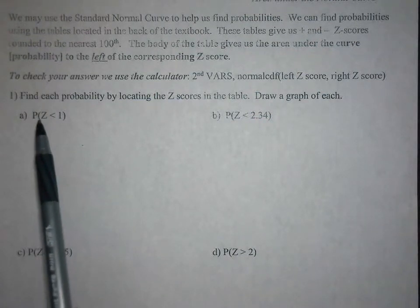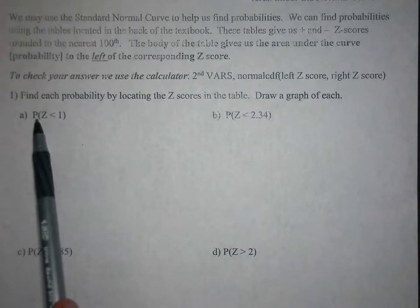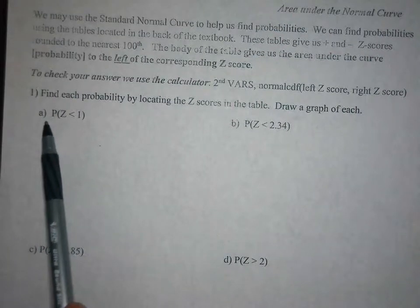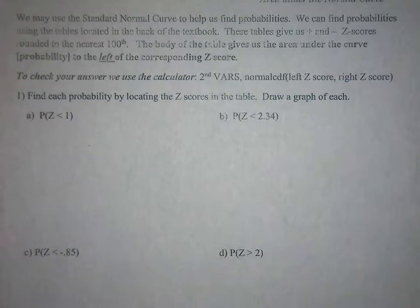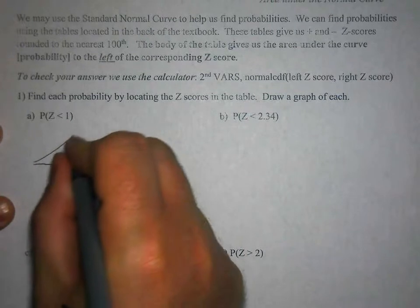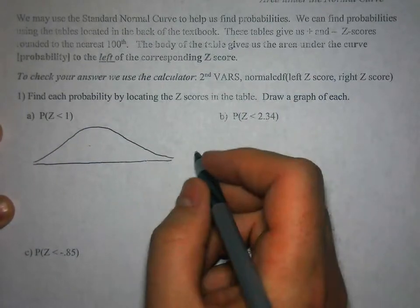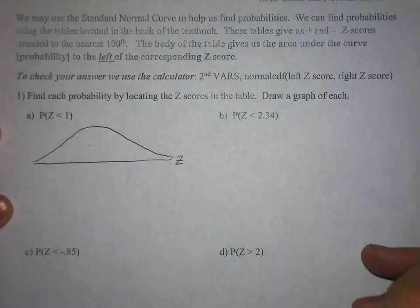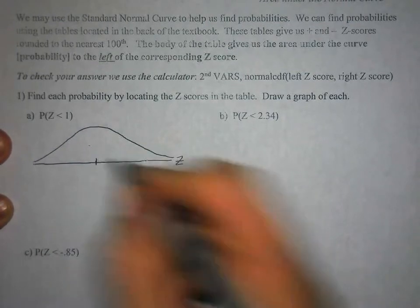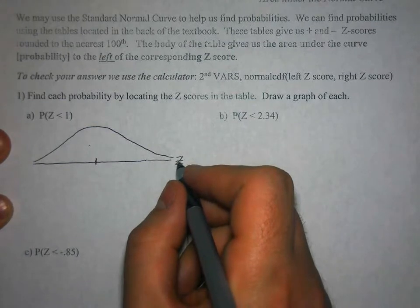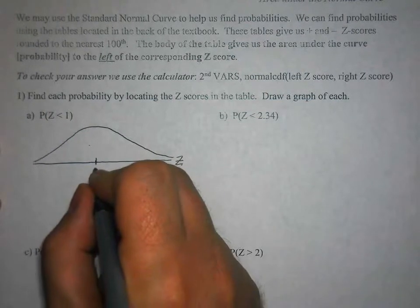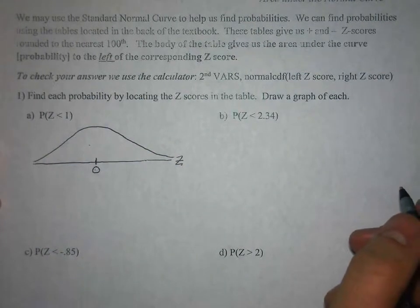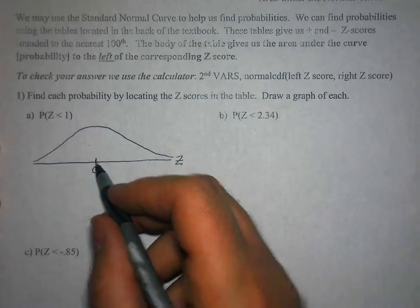We want to find the probability that z is less than 1. So what we're going to do is draw a normal curve on a z-axis. In the center of a standard normal curve, the mean, median, and mode are all 0 standard deviations from the mean, so the number in the middle is always 0 when looking at a z-axis.